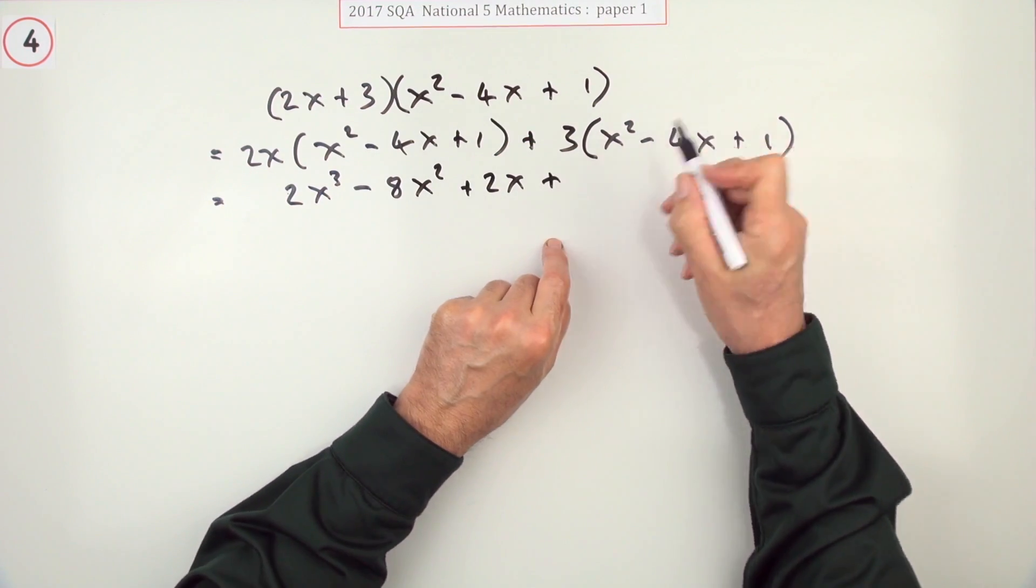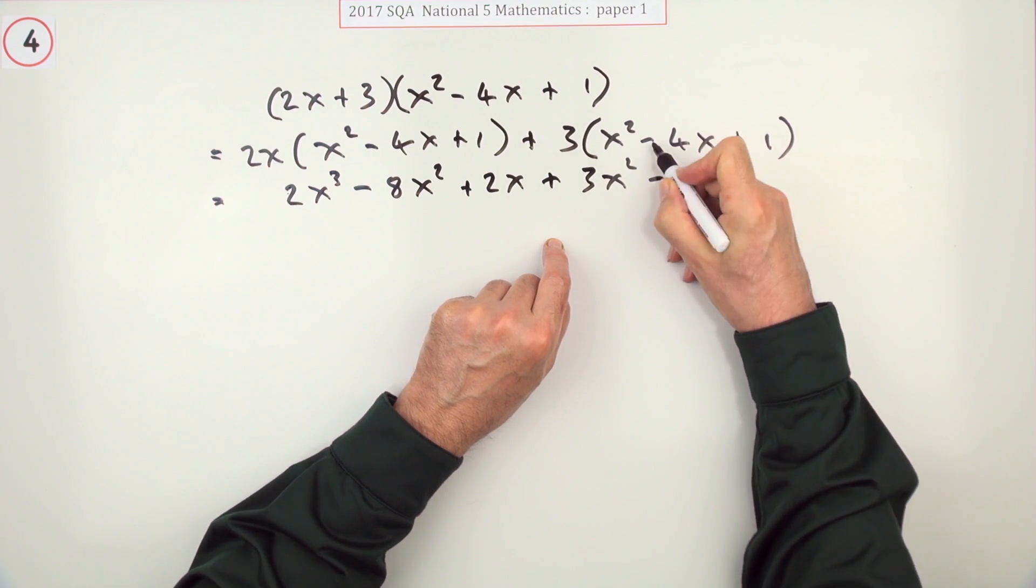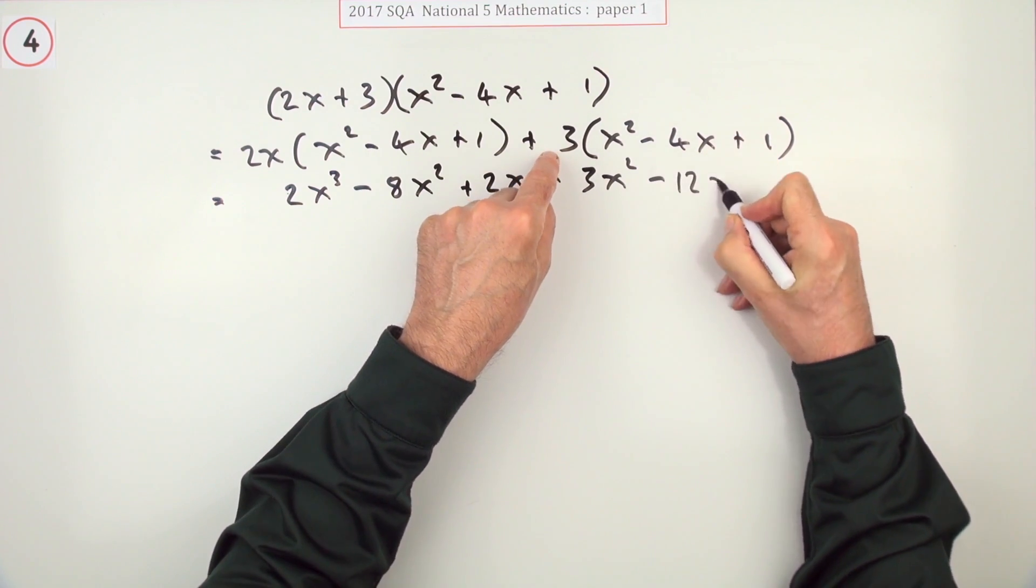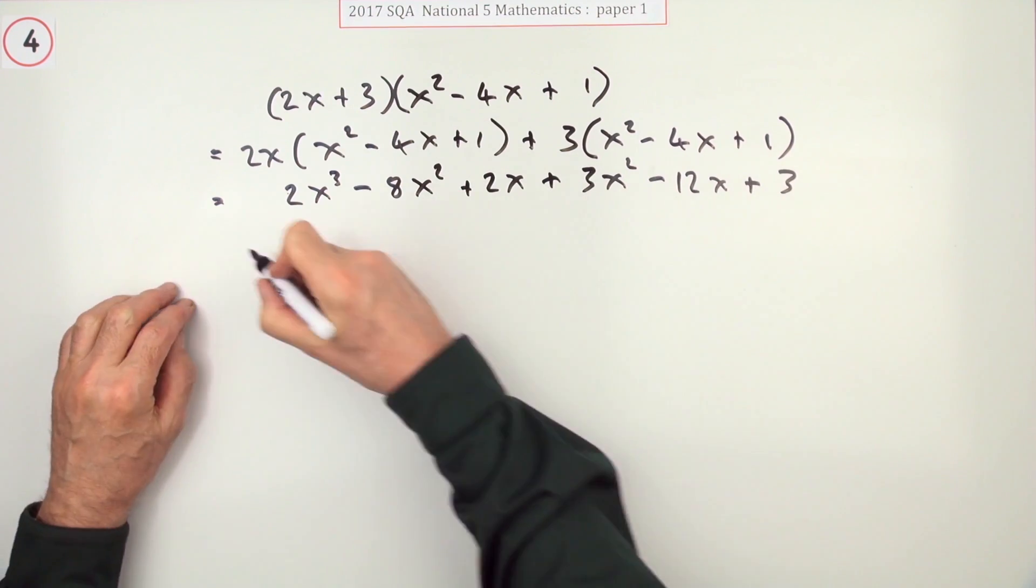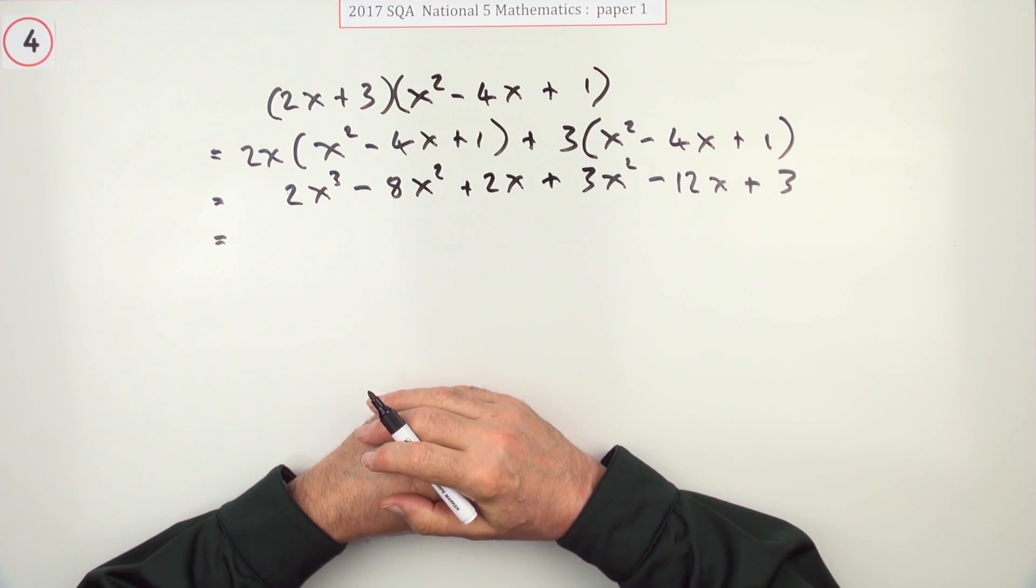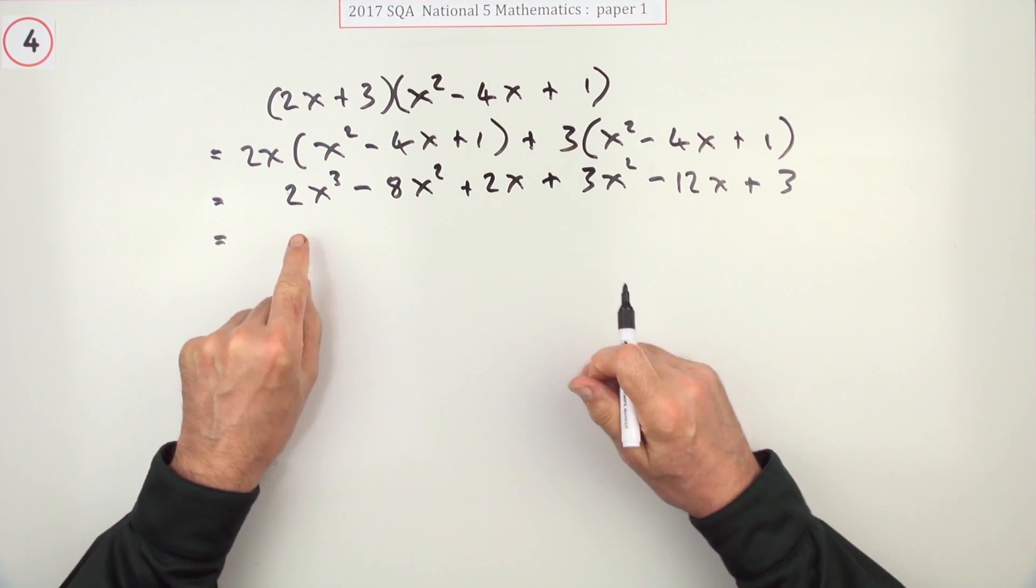Now 3 has a go. It's easier because that'll just be 3x² minus 12x plus 3. So that'll be a mark for expanding that line.